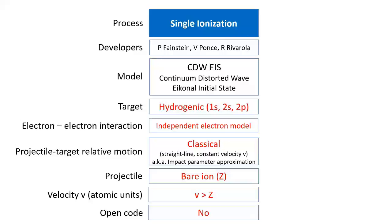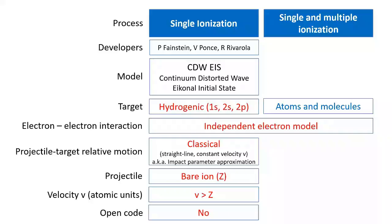The inter-electronic interaction is disregarded in what is called the independent electron model. An important restriction is given by the so-called impact parameter approximation, which means the projectile is supposed to follow a rectilinear and uniform trajectory. This quite severe approach implies that the projectile must be heavy and fast — a bare ion or charge that moves with a speed greater than one atomic unit. It is fair to say that this code has been largely improved in recent years, though these modifications were not included in the version at the AMD webpage.